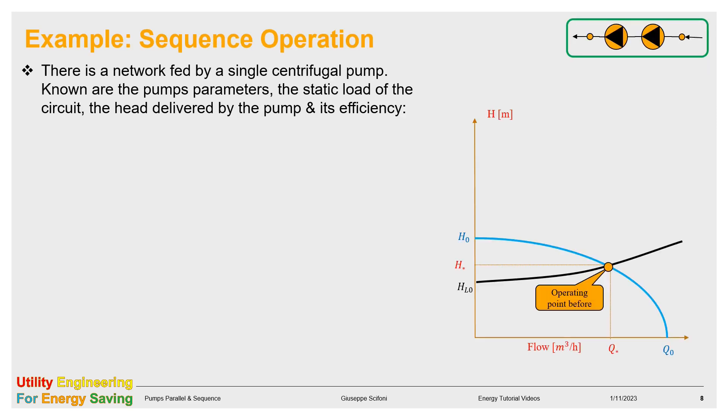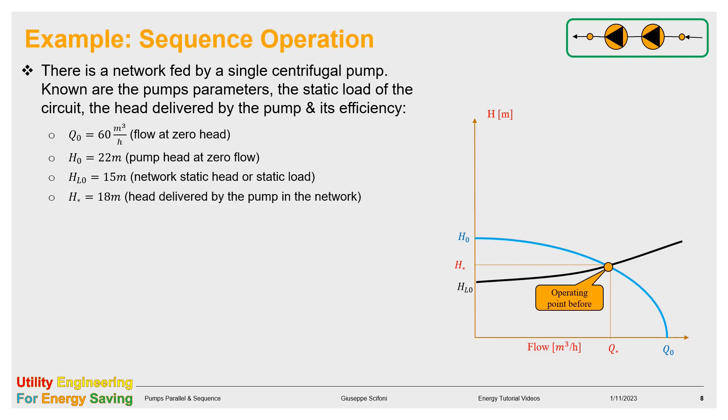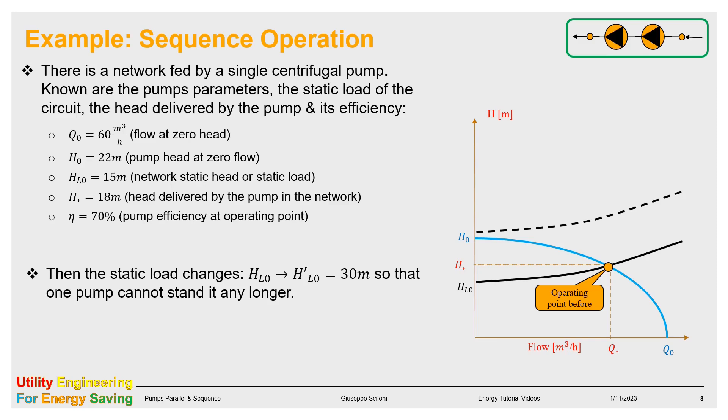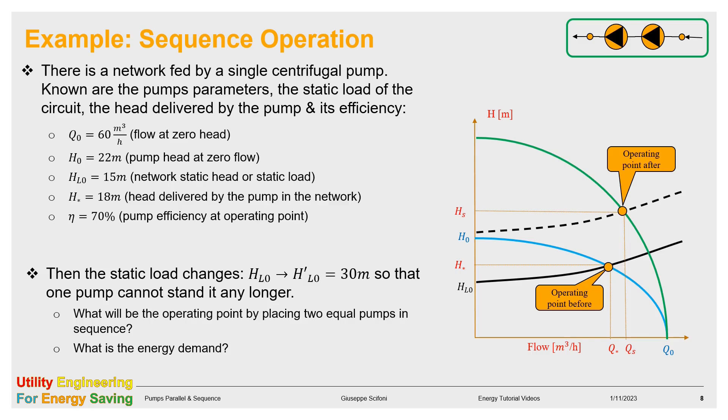Let's see now an example of the sequence operation. A network is fed by a centrifugal pump whose parameters are known. The parameters are Q₀, H₀. On top is known the static head HL₀, the head delivered by the pump H* and its efficiency η. Soon after, the static load changes. It duplicates from 15 to 30 meter so that the pump head will be insufficient. We want to place a second equal pump in sequence. Question is, what is the new operating point and the corresponding energy demand? The situation is graphically illustrated in the chart aside.